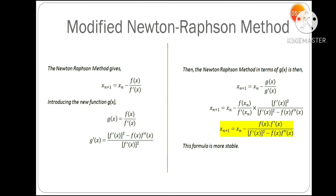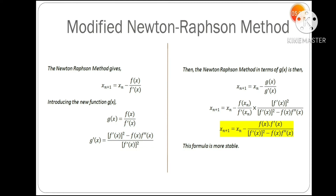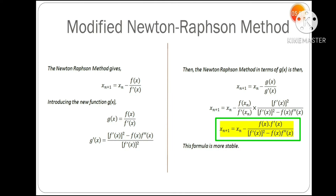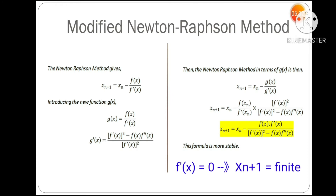We apply the Newton-Raphson method to g(x) instead of f(x). After substituting the expressions for g(x) and g'(x) and simplifying, we obtain the modified Newton-Raphson formula for x_(n+1). In this modified formula, even if f'(x) = 0, the result remains finite — you still get a valid value. This means there is no problem when the derivative is zero, i.e., when we have multiple roots.